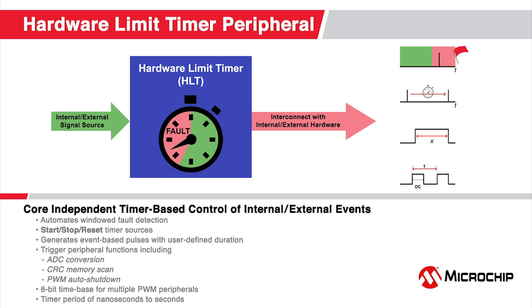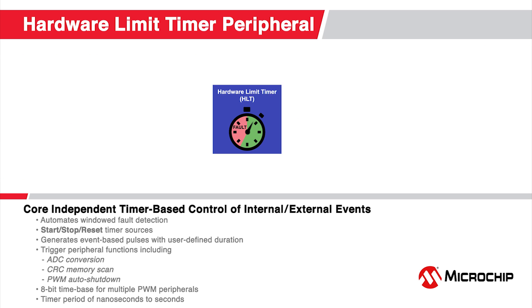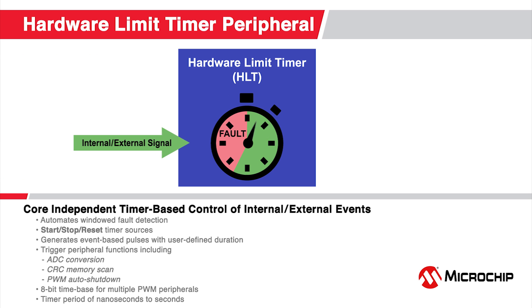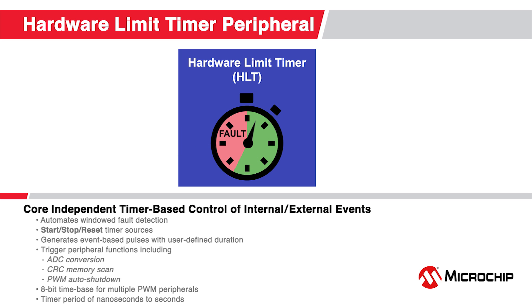Microchip's hardware limit timer is an extension of the 8-bit Timer 2 peripheral that automates a number of tasks, including fault detection without the need for software or elaborate hardware complexity. The hardware limit timer is easily configured to monitor an input signal over a defined time range and automatically generate a notification when a fault, such as an absent signal, has occurred.